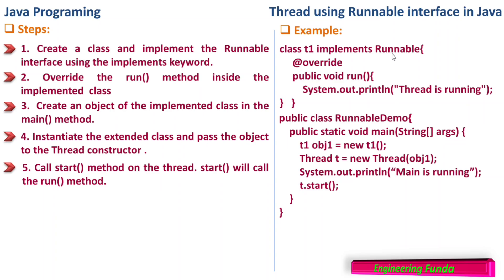So the class T1, which implements the Runnable interface, has an object obj1 created. Now we write Thread t = new Thread(obj1). So we have created an object of the Thread class and passed the object of the Runnable implementation to it. Then System.out.println prints 'main is running', and we call t.start. When we call t.start, where T is the object of the Thread class, it will call the run method. Since we have not extended the Thread class, the body of run is written in T1, which implemented the Runnable interface. The thread will take run from this and create a parallel thread to execute alongside main.